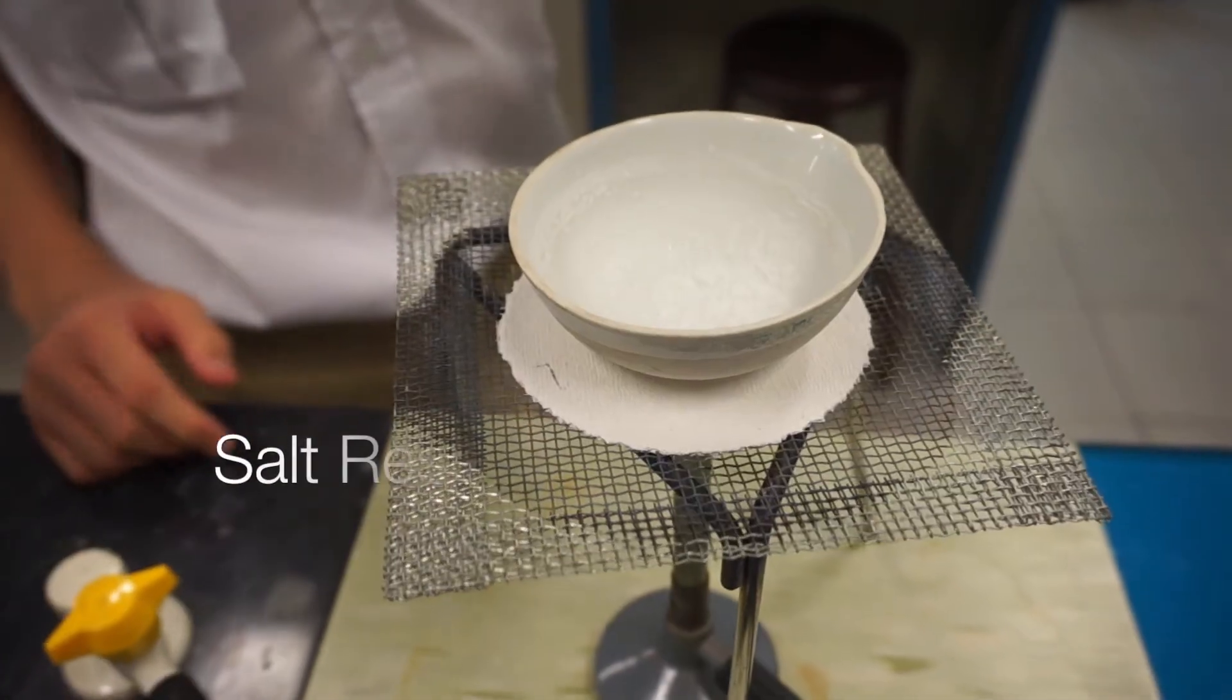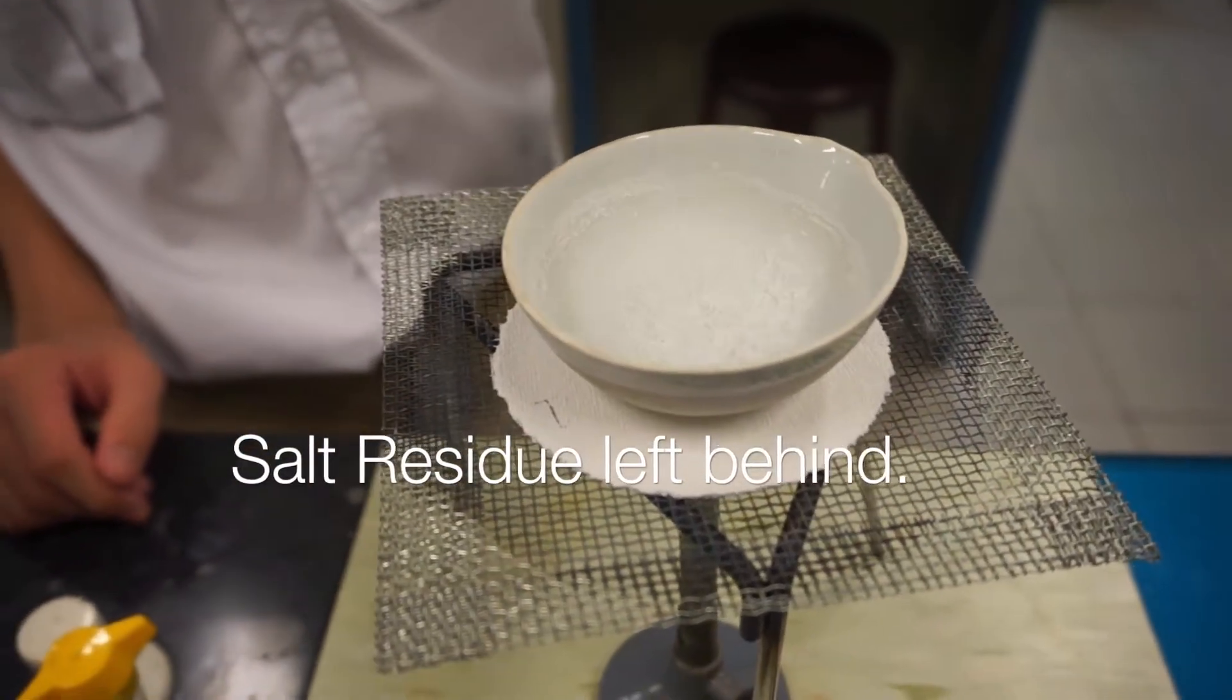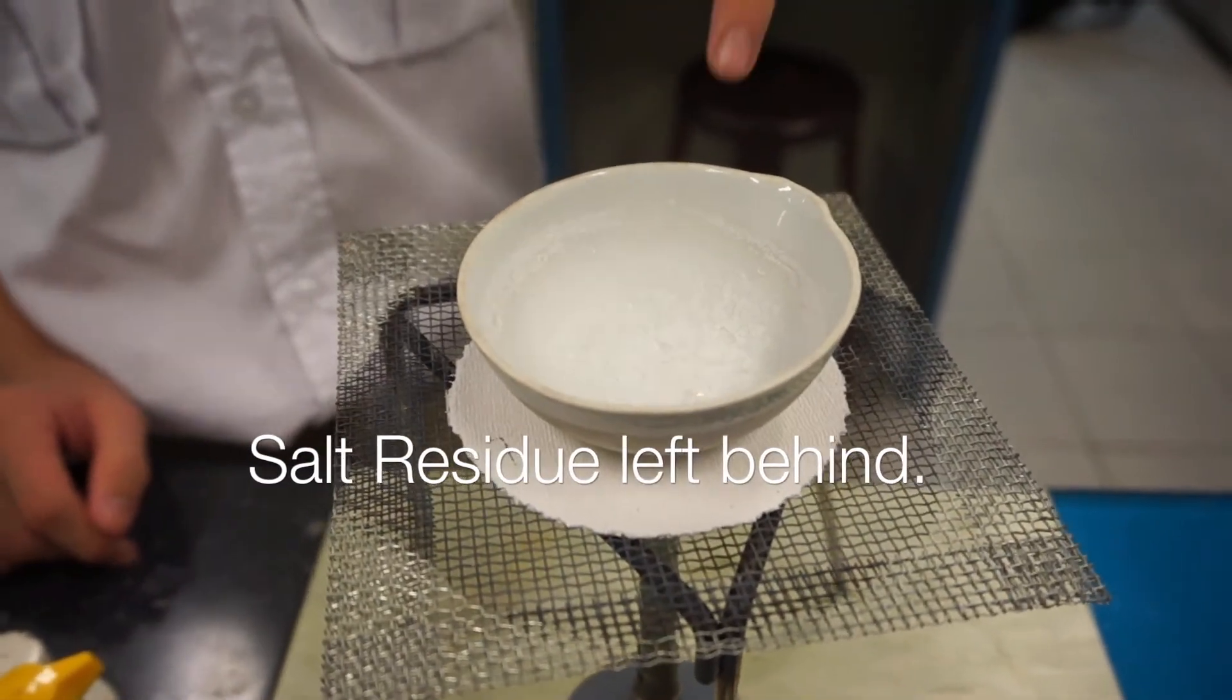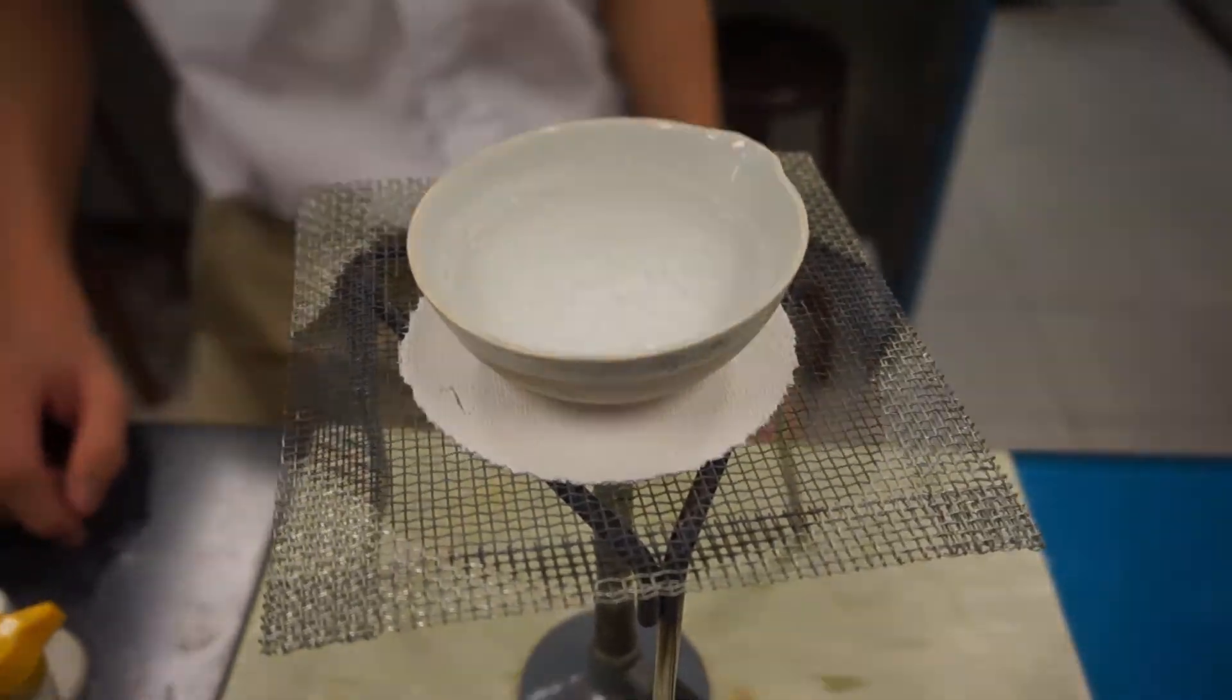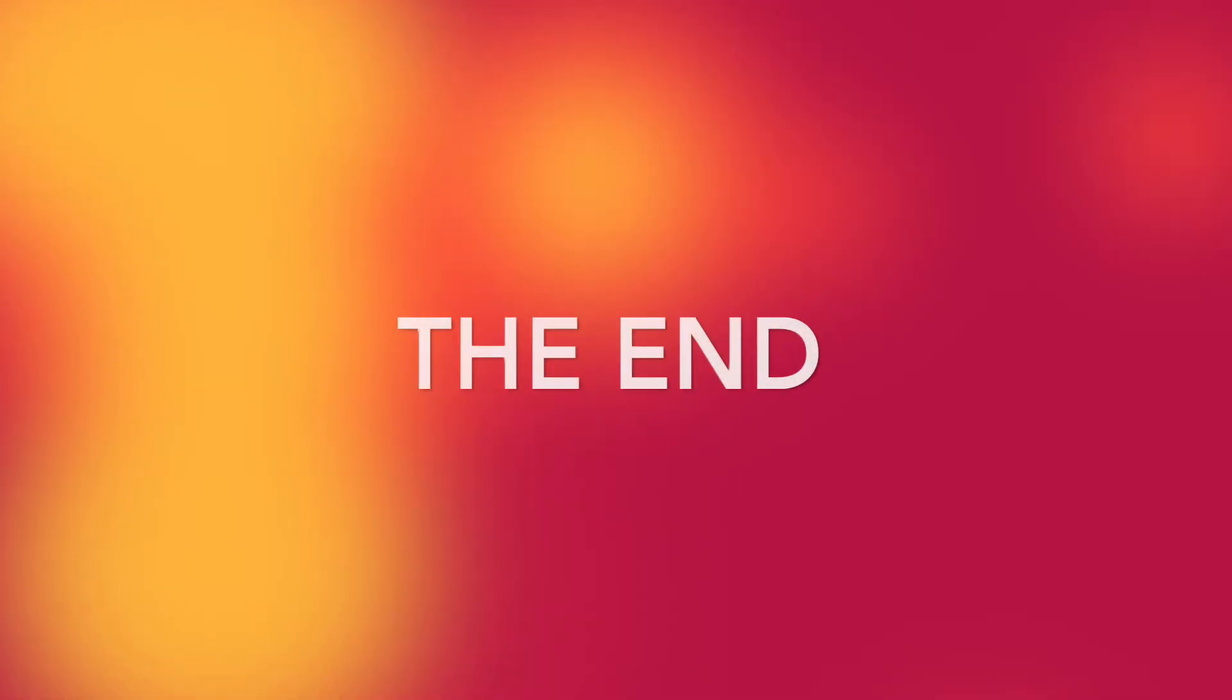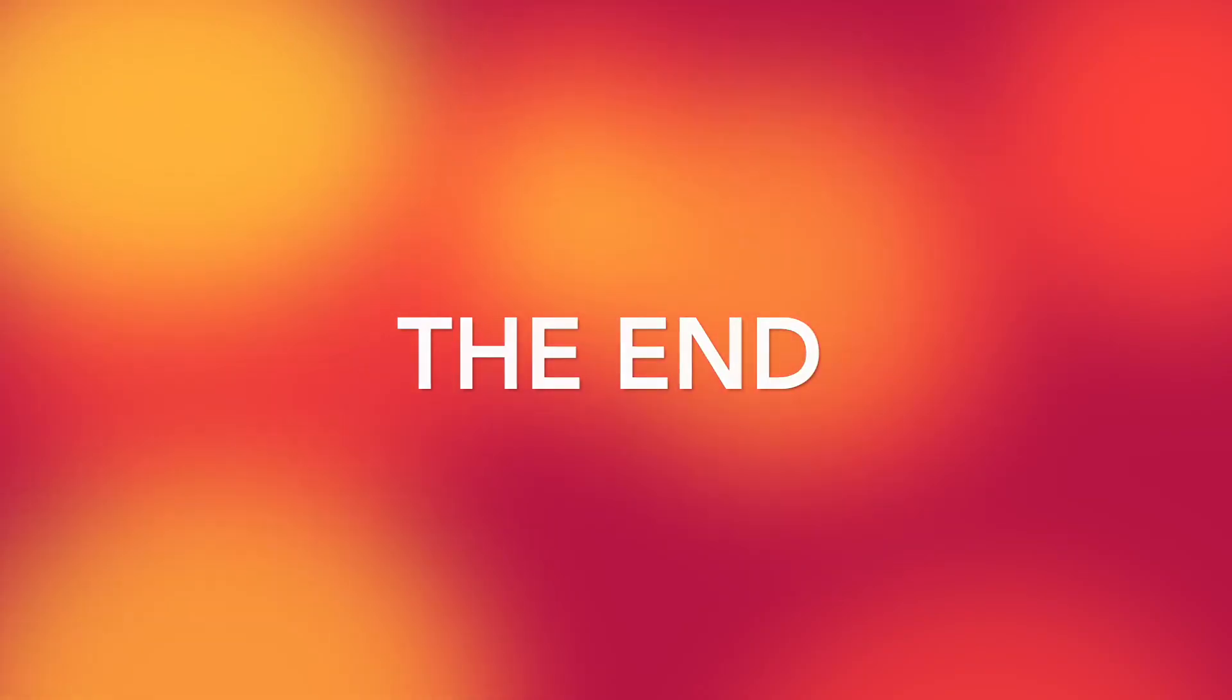As you can see, all the water has evaporated, leaving the salt residue behind. This is how you separate a soluble solid from a solvent using evaporation to dryness.